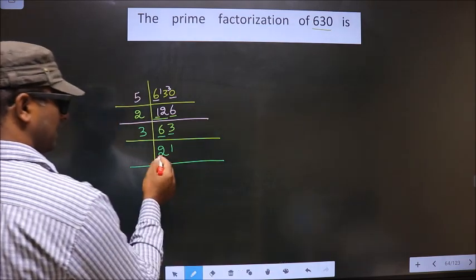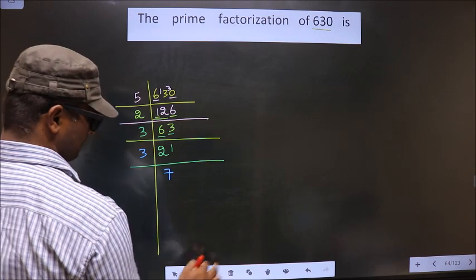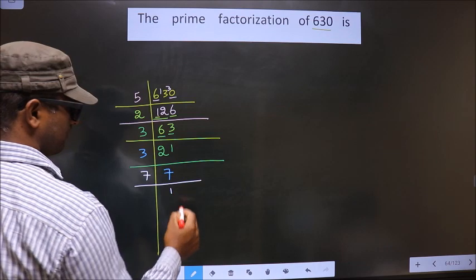Now, here we have 21. 21, we know 3, 7 is 21. Now, 7 is prime number. So we take 7 and 1.